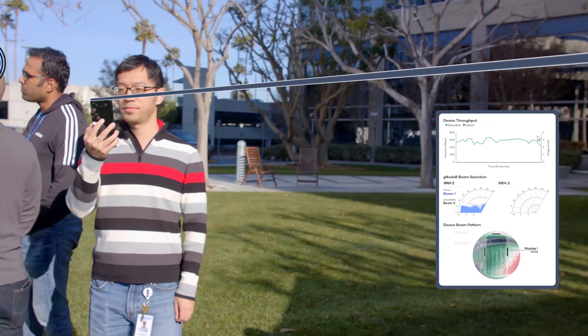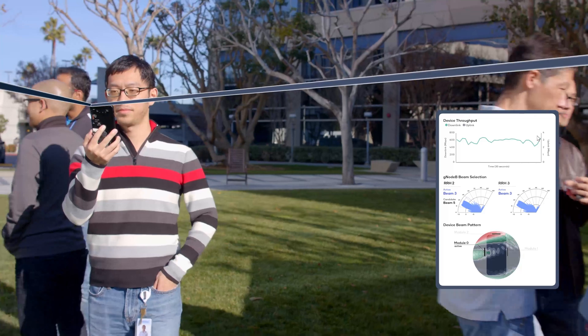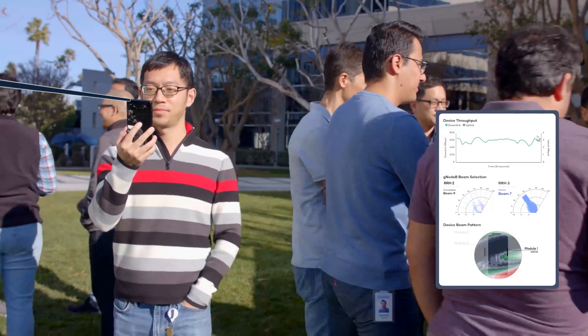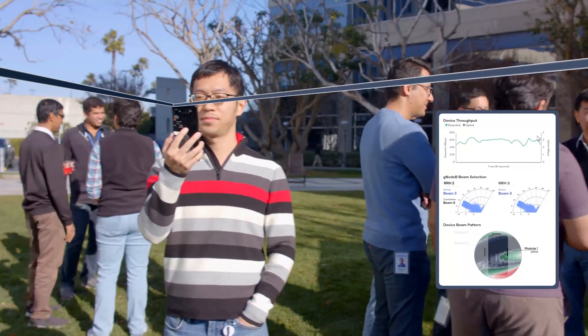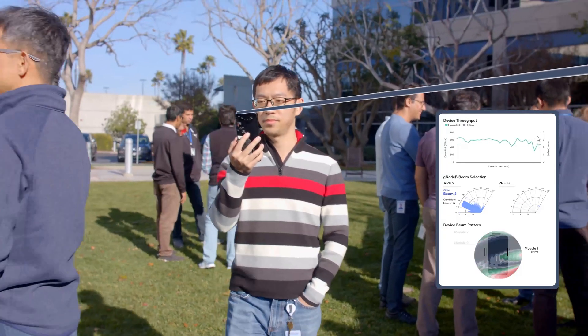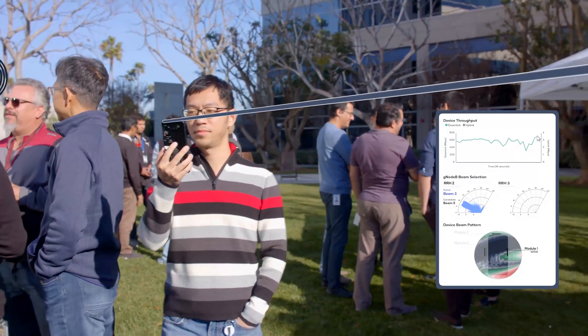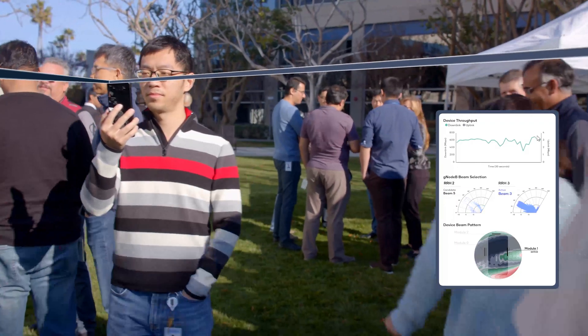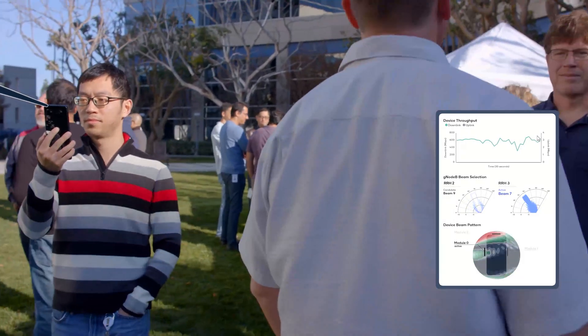In this next demo we'll have a user being served by two remote radio heads, walking through a large dense crowd and being periodically blocked from either side but able to maintain the link and the experience because of the multiple remote radio heads and the multiple antenna modules on the UE.